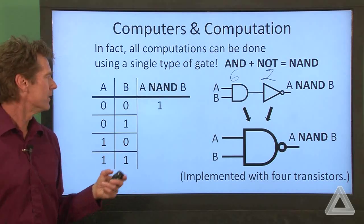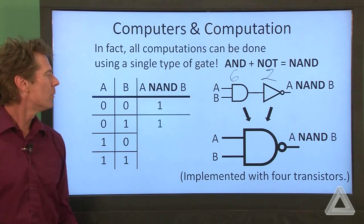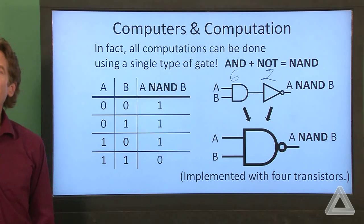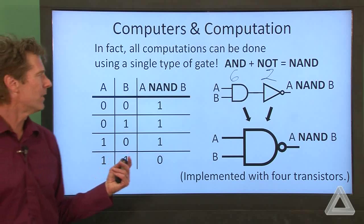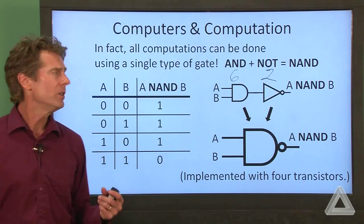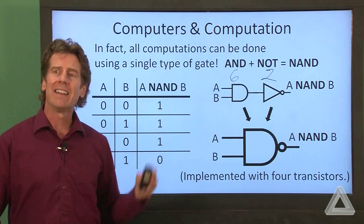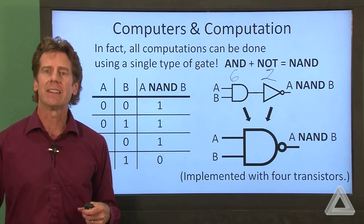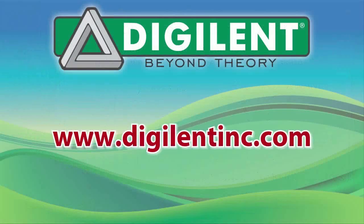We feed that into a NOT function. So we get 1, 1, 1, and 0 for the NAND function. And it turns out everything we do in a computer, we could just realize as a combination of these NAND gates. And I'll show you what it looks like.